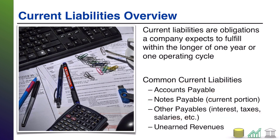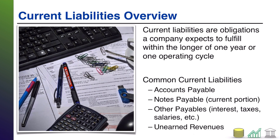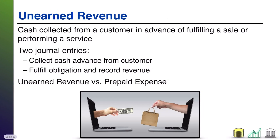things like interest, taxes, or salaries payable. The thing about all of those liabilities is that they are typically debts of cash — you owe a supplier cash, you owe a lender cash, you owe your employees cash. You pay off these liabilities with cash. Unearned revenue is a little bit different because you don't pay off unearned revenue with cash. Unearned revenue actually reflects an obligation to deliver a good or service instead.